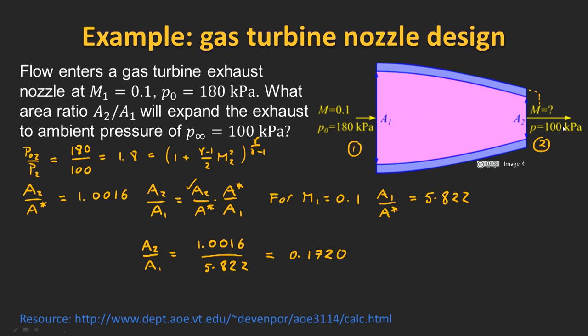This is a good example of how we can use the theory we've developed to solve a simple nozzle flow problem, and it introduces the important concept of the virtual throat — the Mach number doesn't actually have to reach 1 within your physical nozzle to use these relations between the current flow state and the critical state. In the next unit, we're going to look at another very interesting compressible nozzle flow phenomenon, which is that of choking.